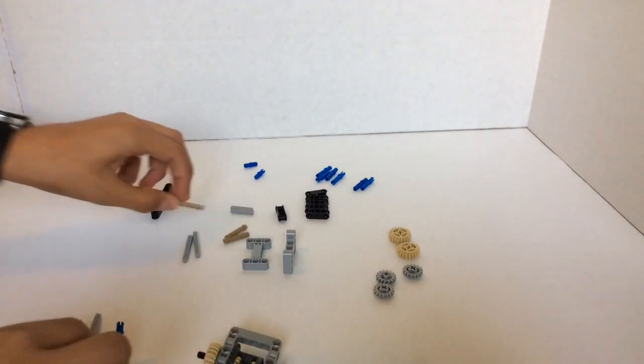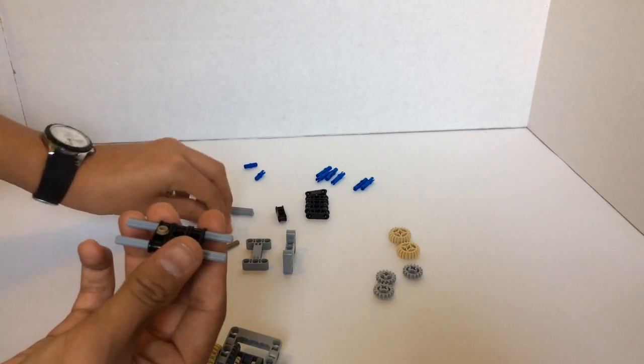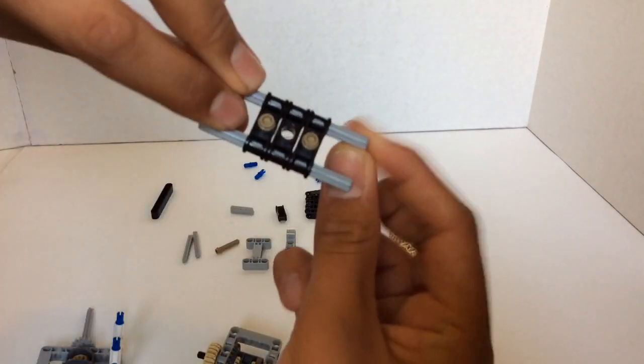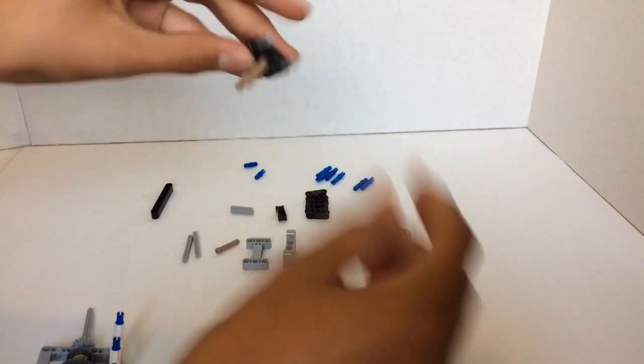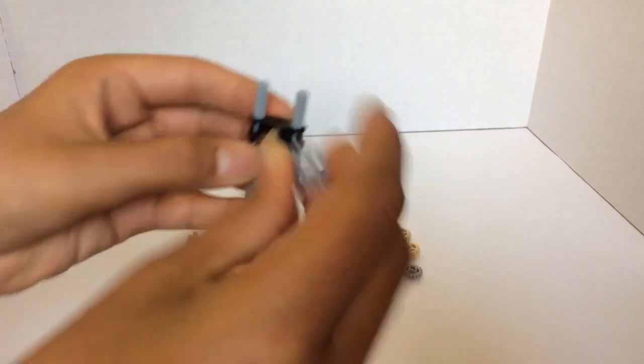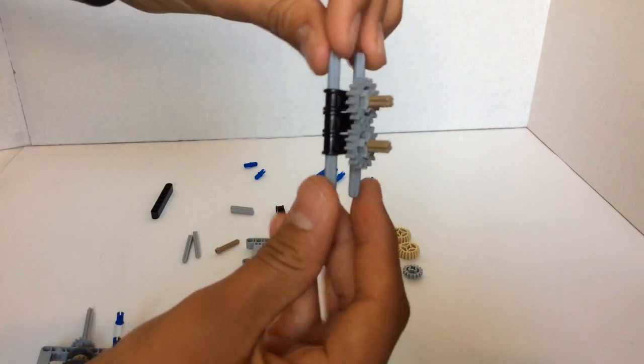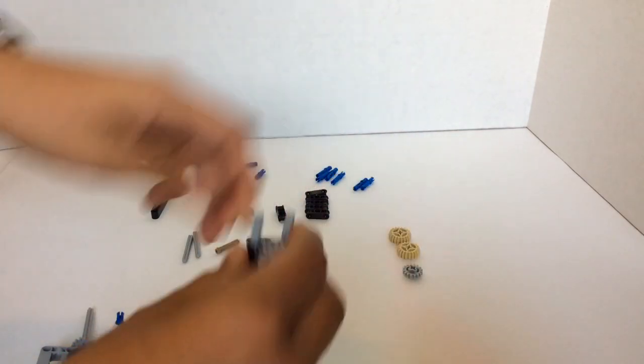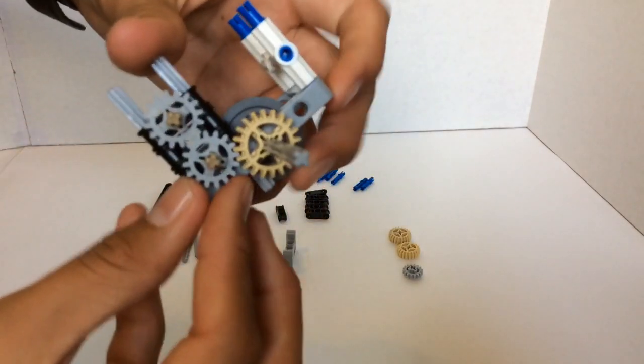And then you're going to actually take that out and put two three stud beams with the stops like this. And then put two of the small gears on it, on the little three stud pins. So you'll end up with something like this. And then you'll put it next to the tan gear so those mesh.